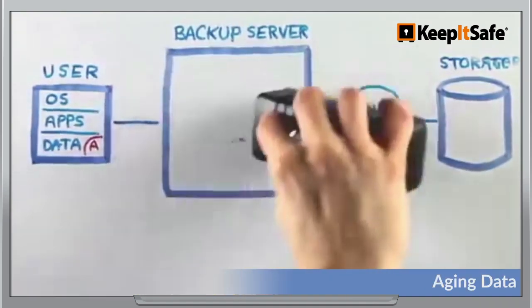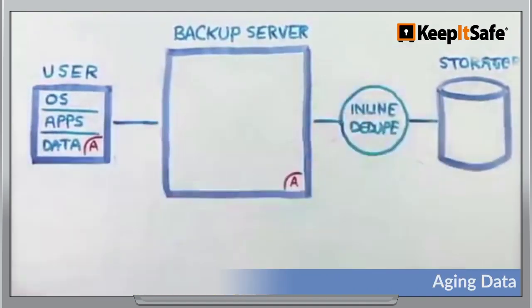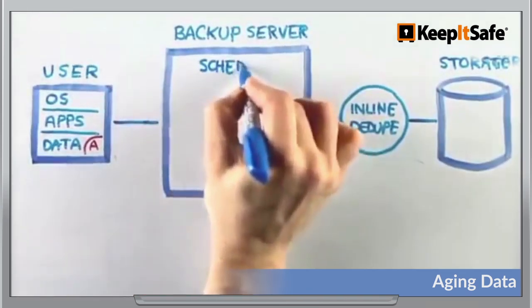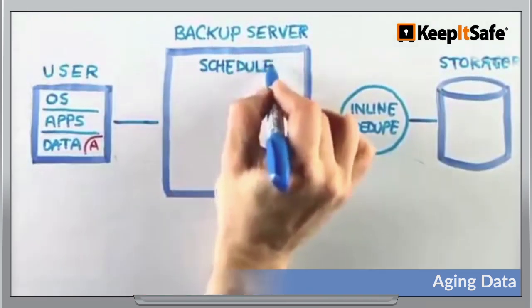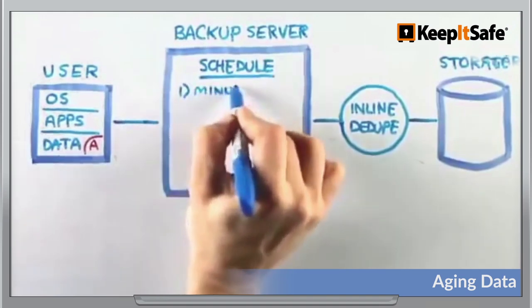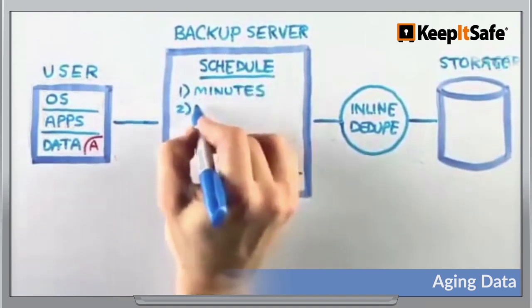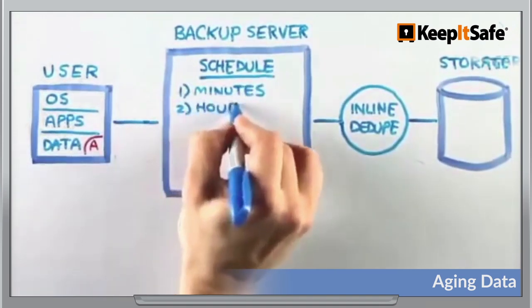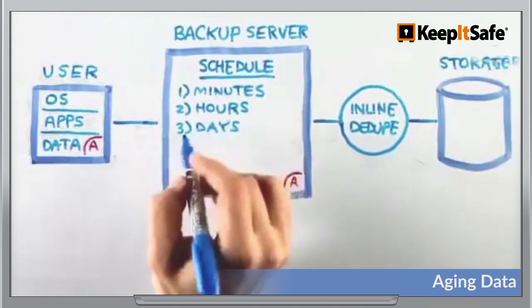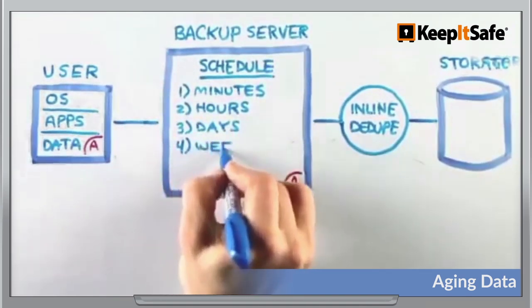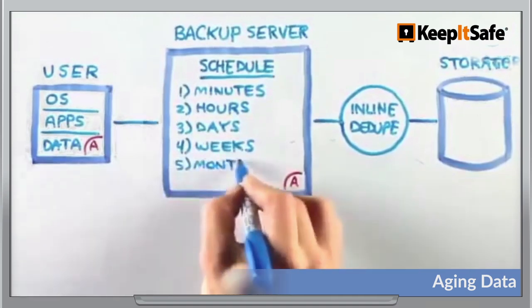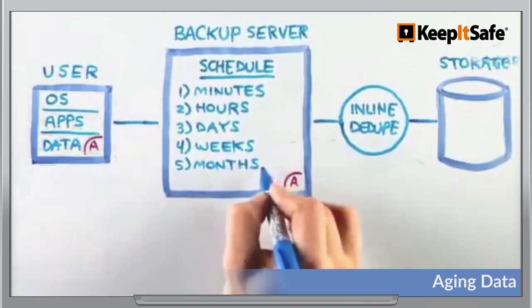In general, as data ages, we access it less frequently. Working with that trend, backups can parallel a data lifecycle. Starting with backups every five minutes, Keep It Safe DR can dial back to once an hour, then once a day, week, month, etc., until eventually the data is no longer needed, locally or possibly at all.